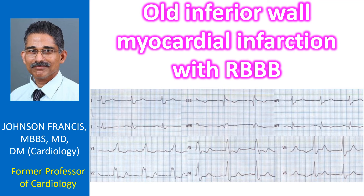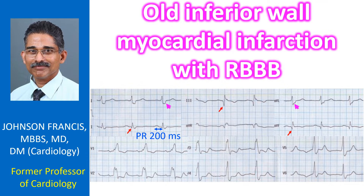Regular sinus rhythm at about 60 per minute with a wide QRS is noted. The PR interval is 200 ms. The initial Q waves in leads 2, 3, and AVF suggest an old inferior wall myocardial infarction. The QRS is wide, lasting 160 ms. The slurred S waves in leads 1, AVL, V5, and V6, as well as the slurred R waves in V1, suggest right bundle branch block.